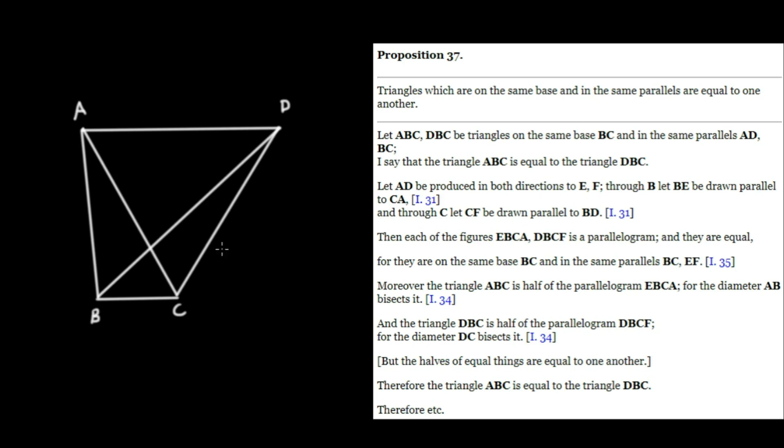And to prove this, we're going to let AD be produced in both directions to E and F. So I'll produce AD over to the left, let's say to E, and produced to the right over to F. So this is going to be E and this will be F.